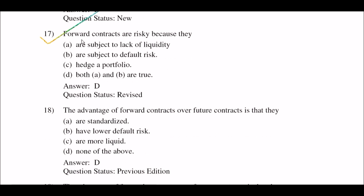Next question: forward contracts are risky because they — option A: are subject to lack of liquidity; option B: are subject to default risk; option C: hedge a portfolio; option D: both A and B are true. The right answer is option D: both A and B are true. Forward contracts are risky because they are subject to lack of liquidity as well as default risk.